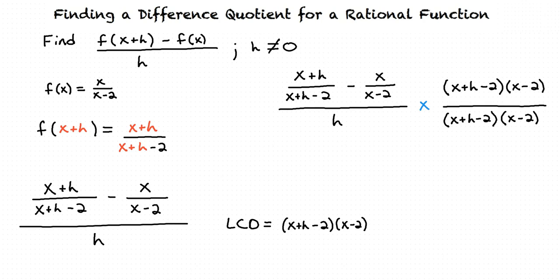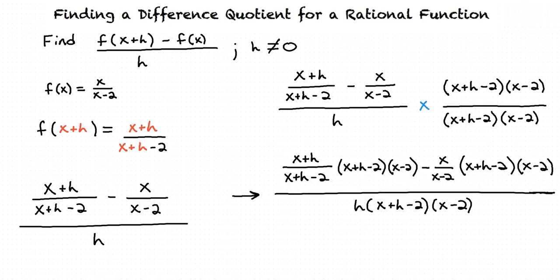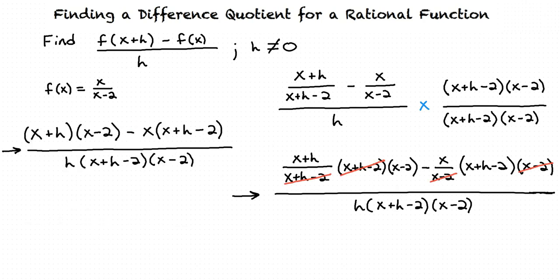Doing this results in the following expression. Next, before we distribute the numerator, we can simplify by cancelling like terms. Once we have cancelled like terms, we can use the FOIL method in the numerator to multiply each term together.